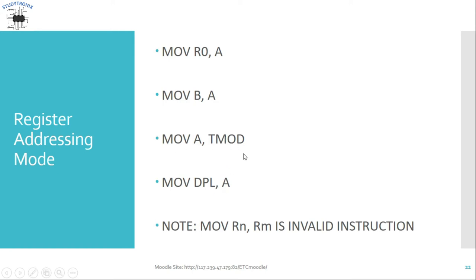One important note: the instruction MOV Rn, Rm is an invalid instruction. We cannot have both the source operand and destination operand as general-purpose registers at the same time. Only one operand can be a general-purpose register at a time.